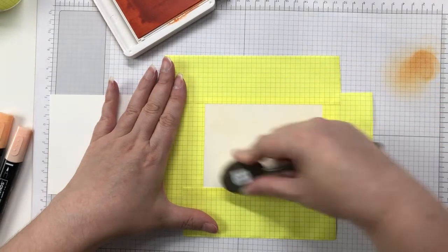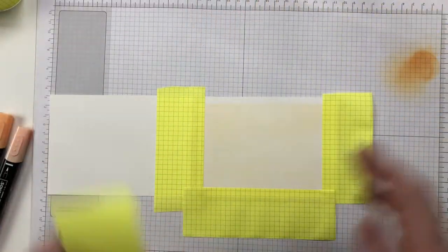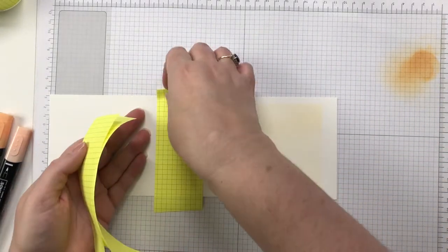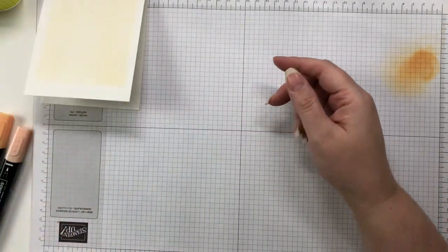Start off really softly because you can always add more color but obviously you can't take it away. And then you can see I've got this really nice framework and those post-it note pieces I can use again and again for different things.